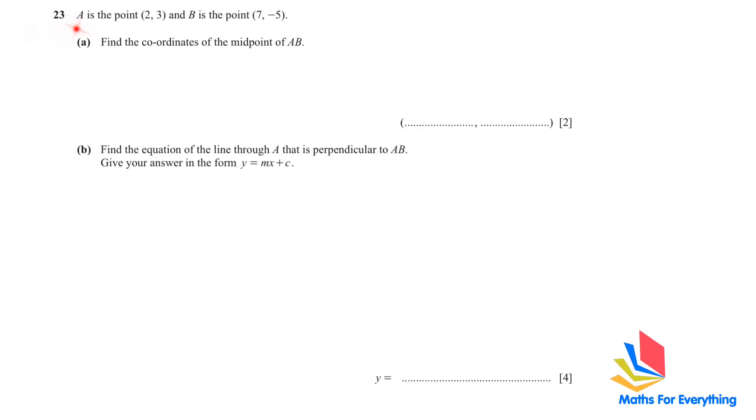Question 23: A is the point (2, 3) and B is the point (7, -5). Find the coordinates of the midpoint of AB. To find the midpoint, we use the formula (x1 + x2)/2, (y1 + y2)/2. So (2 + 7)/2 gives us 4.5. For the y coordinate, (3 + (-5))/2 gives us negative 1. So the midpoint is (4.5, -1).